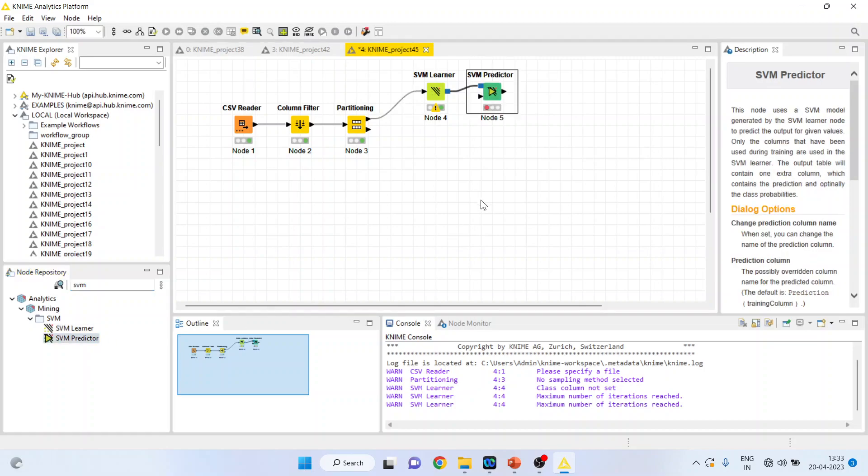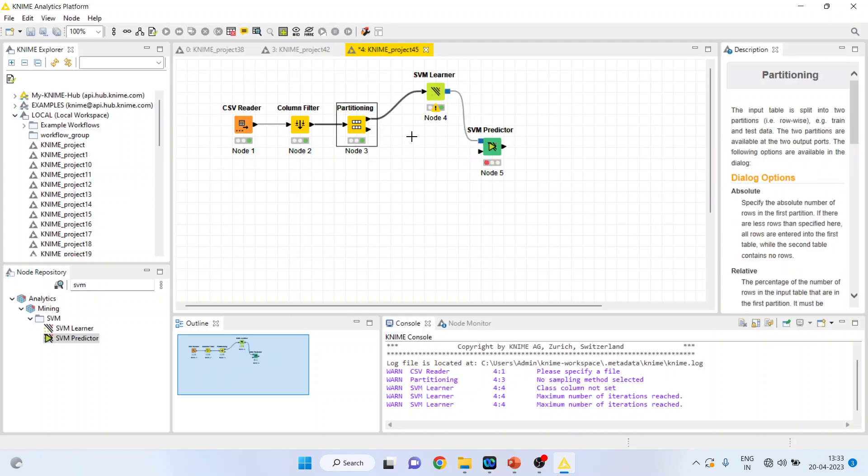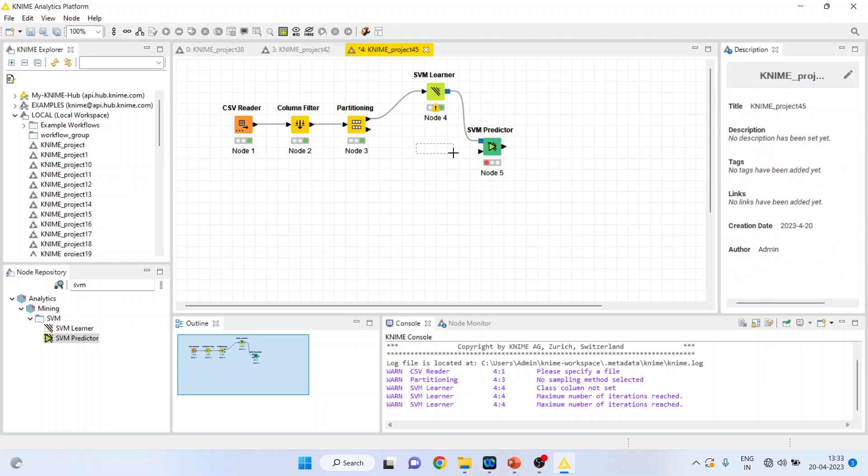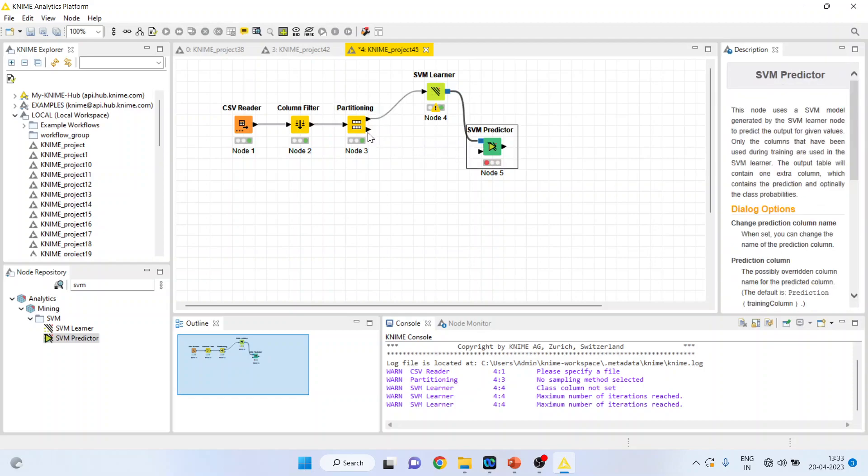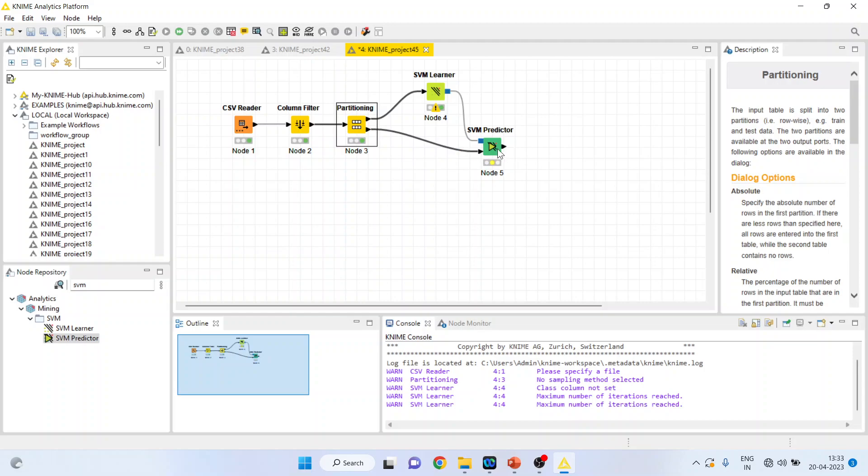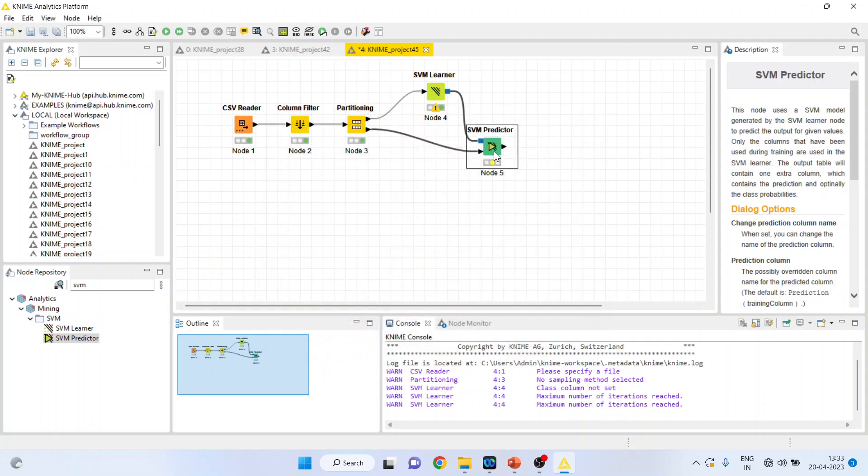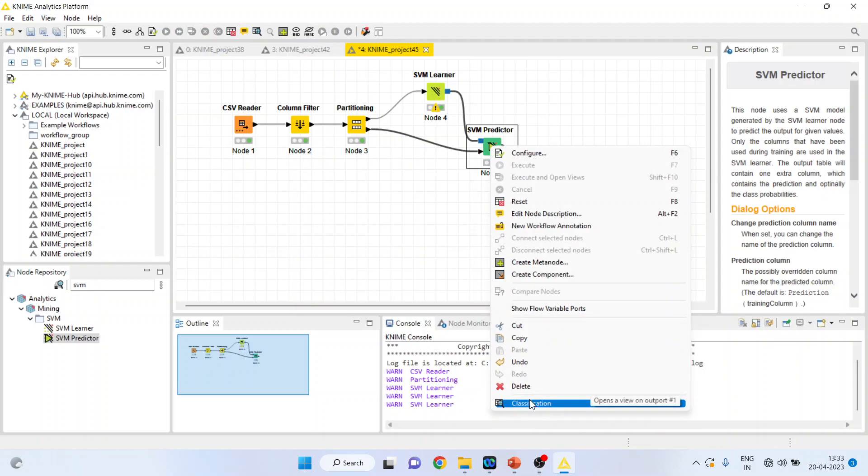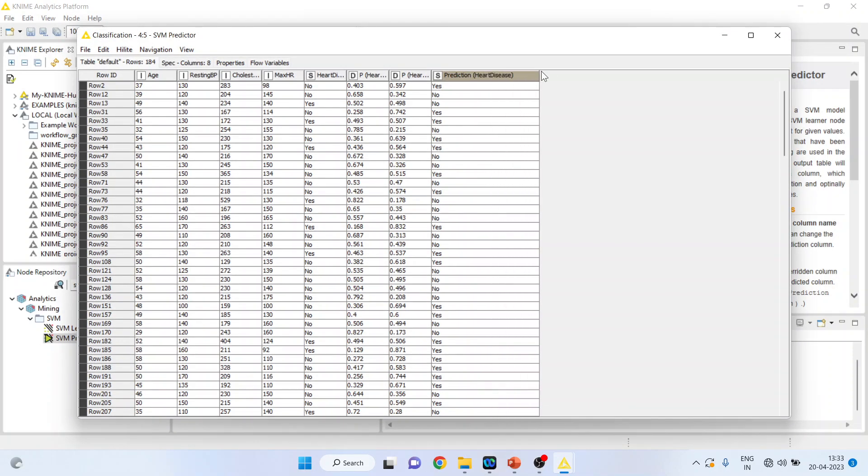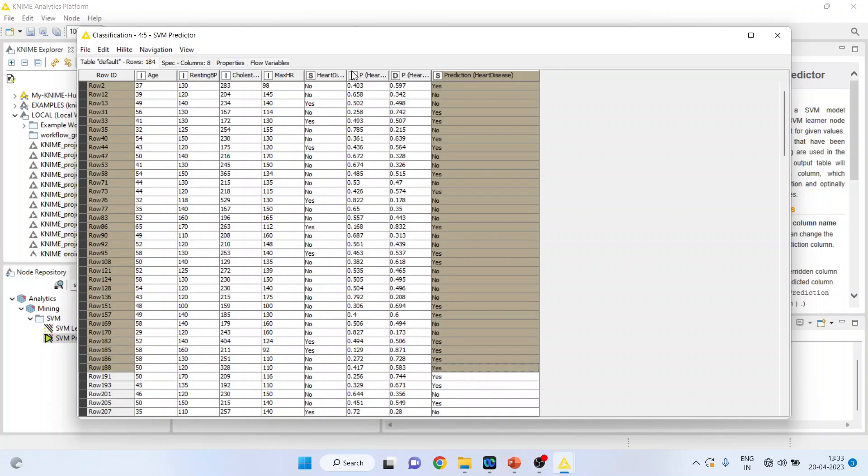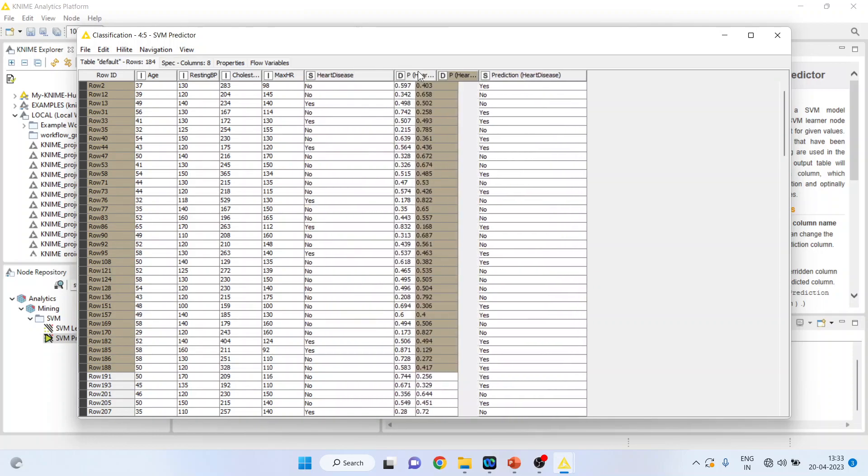So with this learner, now let's do the prediction. This predictor will get its learning from SVM learner, but it will get its data set from the partitioning, the remaining 20% of the data. Right-click on it, configure. Mark both these boxes. Click OK. Right-click on it and execute. Again, right-click on it and see the classification. So this is the prediction which has been done according to the algorithm, and this is the original data set.